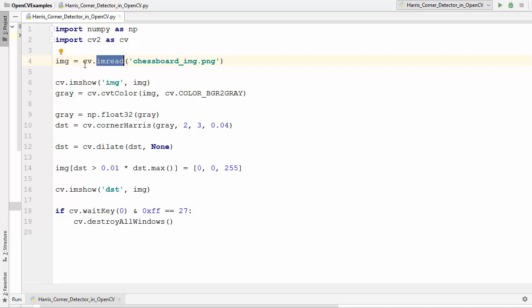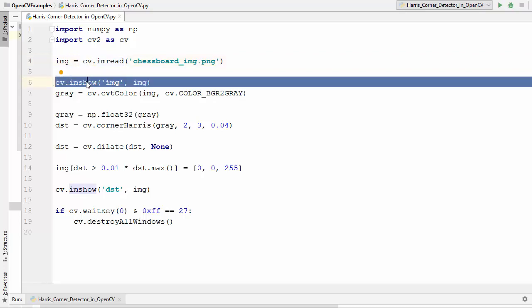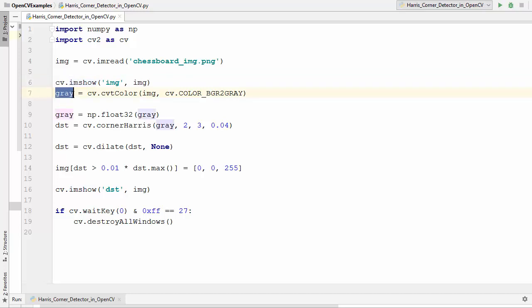After we read this image, I'm just showing the original image so we have the original image and the output at the end to compare. In the next step I'm converting this image into a grayscale image to get better results, because the cv2.cornerHarris method takes the grayscale image in the float32 format.